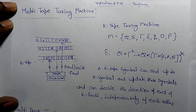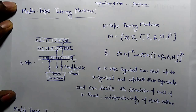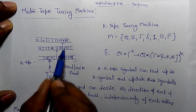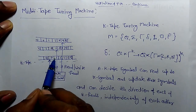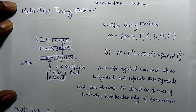In the continuation of last lecture on variations of Turing machines and their equivalence, we are going to learn multi-tape Turing machines and multi-track Turing machines. In a multi-tape Turing machine, there are k number of tapes and k number of heads for reading the input symbols. A k-tape machine can read up to k symbols, update these symbols, and decide the direction of each of the k heads independently.